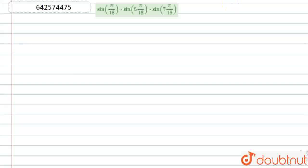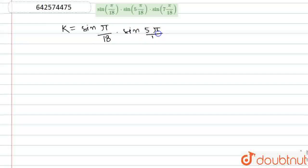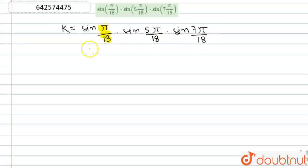What we will do is let us suppose that K is equal to sin(5π/18) into sin(5π/18) into sin(7π/18). We have to find the value of this product. Now, we know that π/18 is nothing but 10 degrees because π is 180 degrees, so π/18 equals 10 degrees. Therefore, 5π/18 will become 50 degrees and 7π/18 will become 70 degrees.